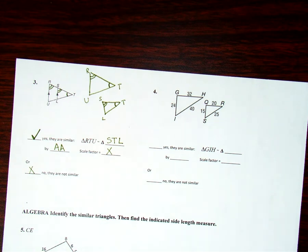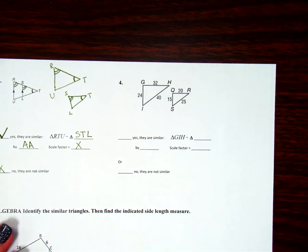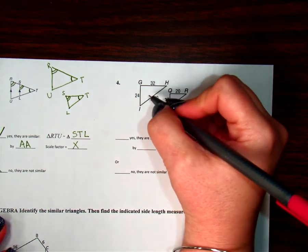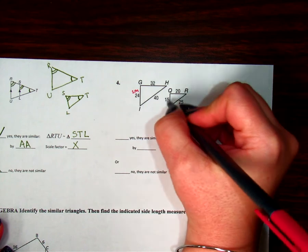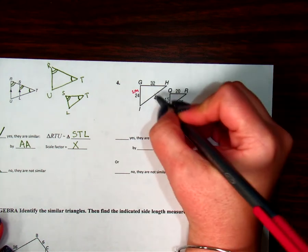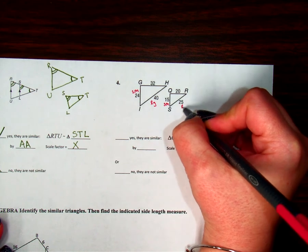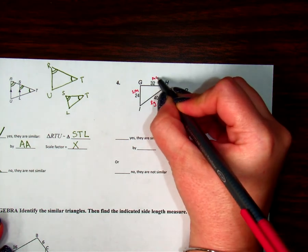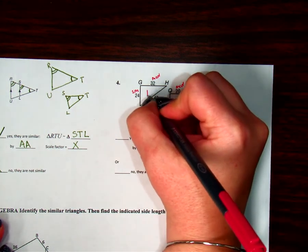Let's go look at number four. On number four, I have all of my numbers there, or all my sides are labeled with numbers. So I'm going to test side-side-side. And to do that, I'm going to compare my smallest side to my smallest side, my largest side to my largest side, and then my medium side to my medium side.